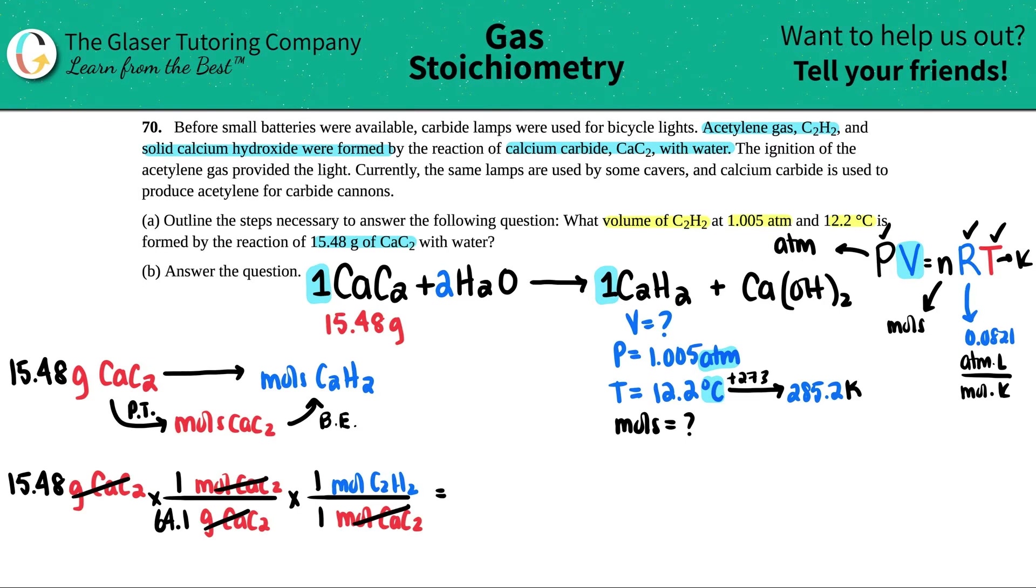Now all we have to do is just do 15.48 divided by 64.1. Try not to round as much here because this is not your final answer. So 0.24149 8. And that's now moles of the C2H2. So we finally found out that number. This is 0.241498 moles. And now we have the N value, so now we can solve for the volume.